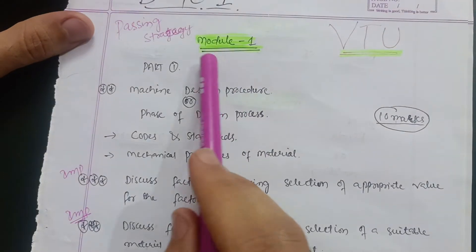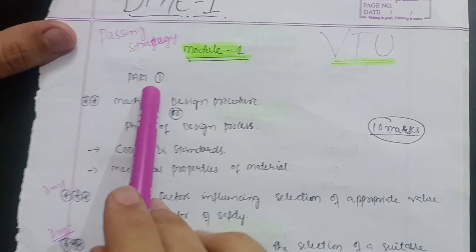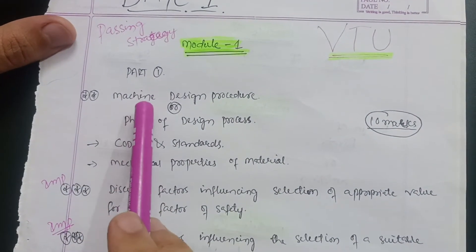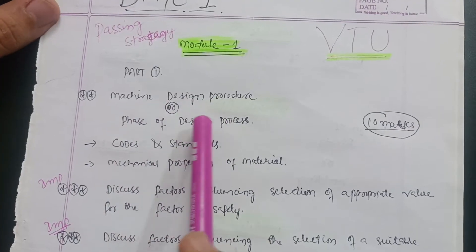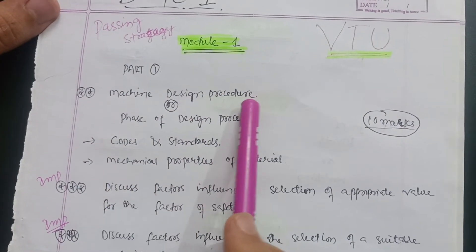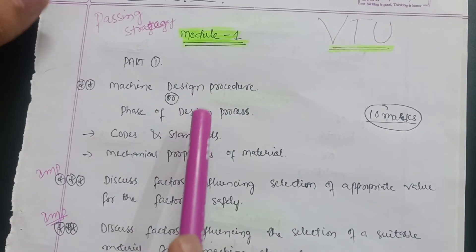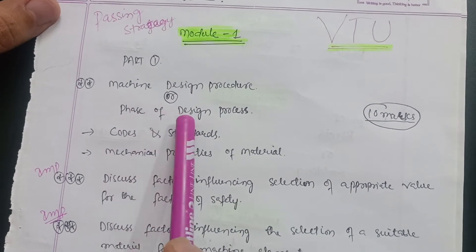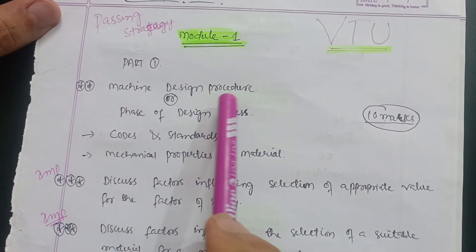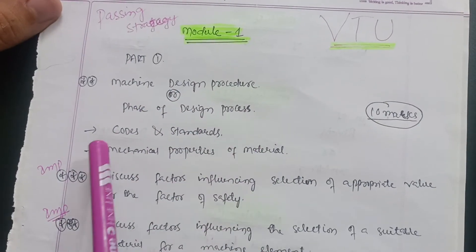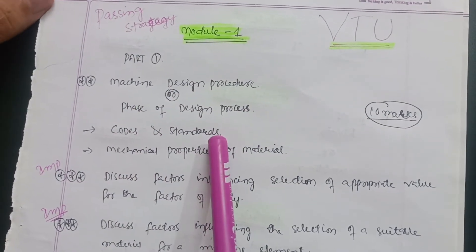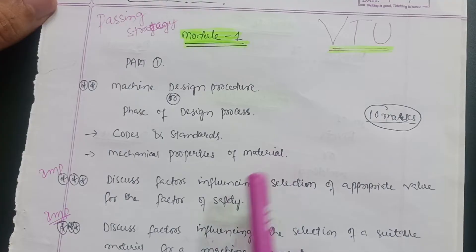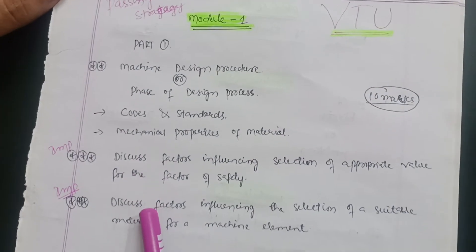In the first module, you just go through the first part only in which you have some theory concepts like machine design procedure, it is most important question in the first module. Sometimes they may ask phase of design process - it is same as machine design procedure. Then codes and standards theory portion is there, mechanical properties of material, and these two questions are much more important.